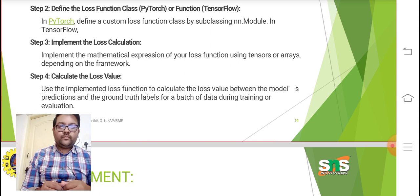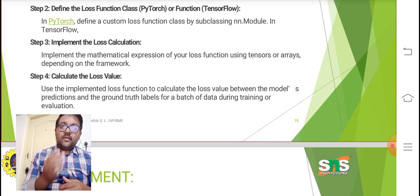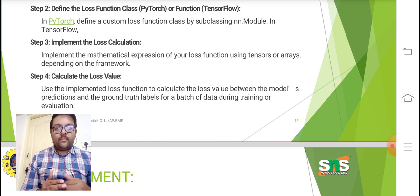Step 4: Calculate the loss value. Use the implemented loss function to calculate the loss value between the model predictions and the ground truth labels for a batch of data during training or testing.